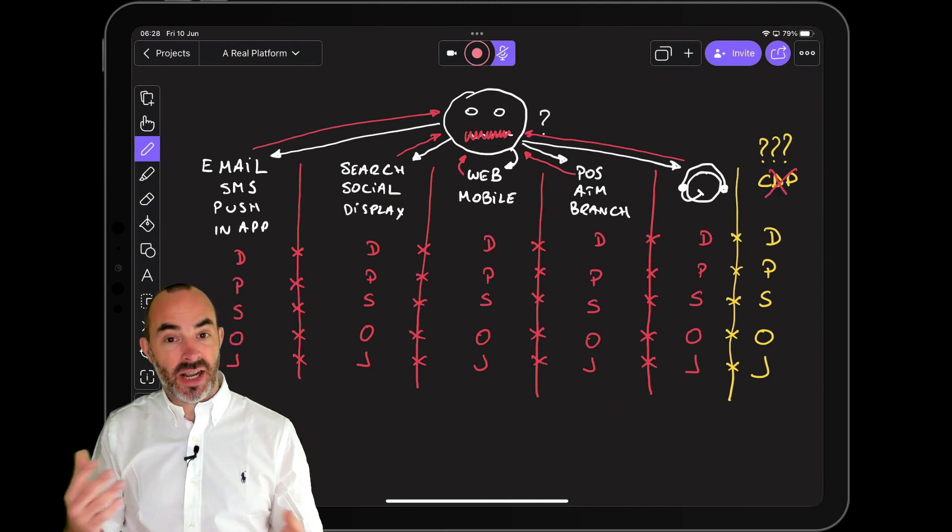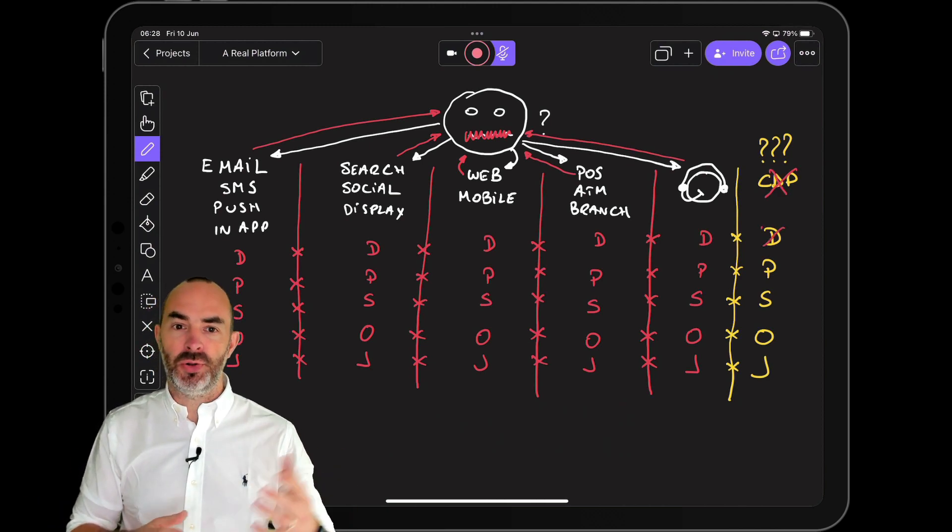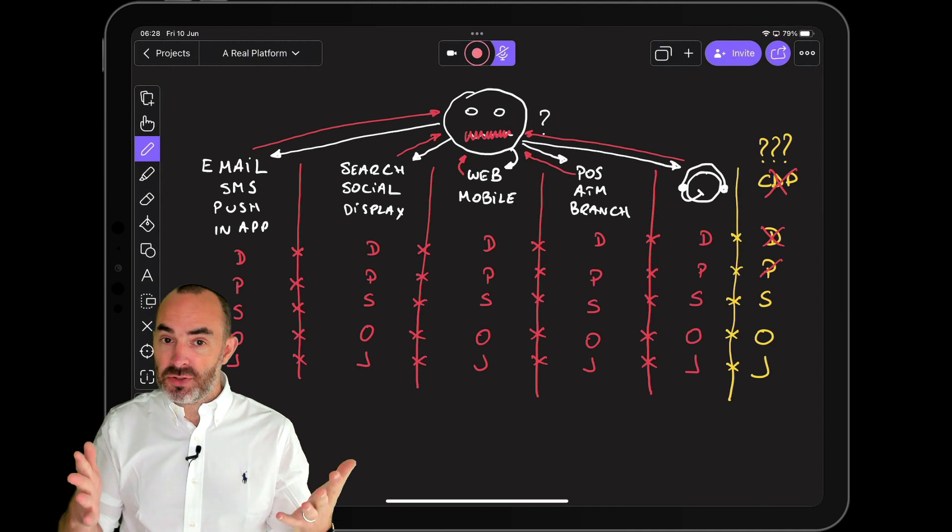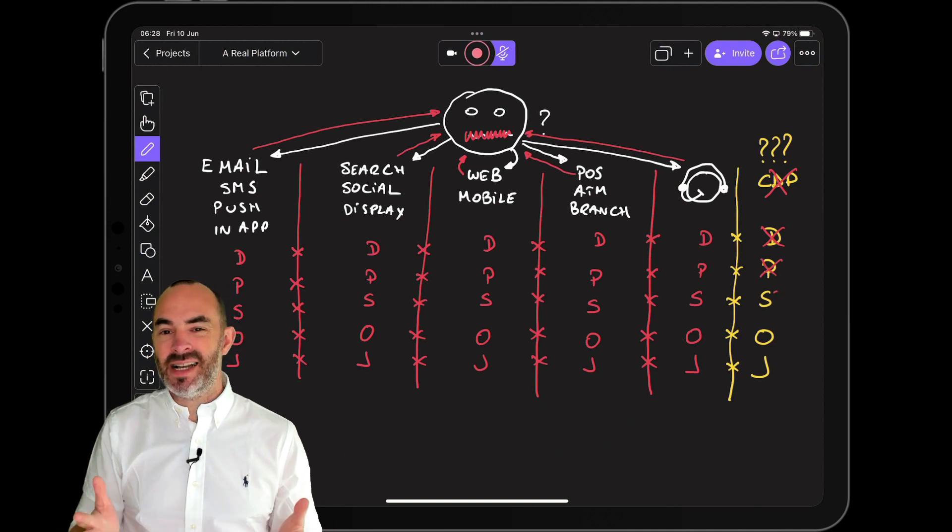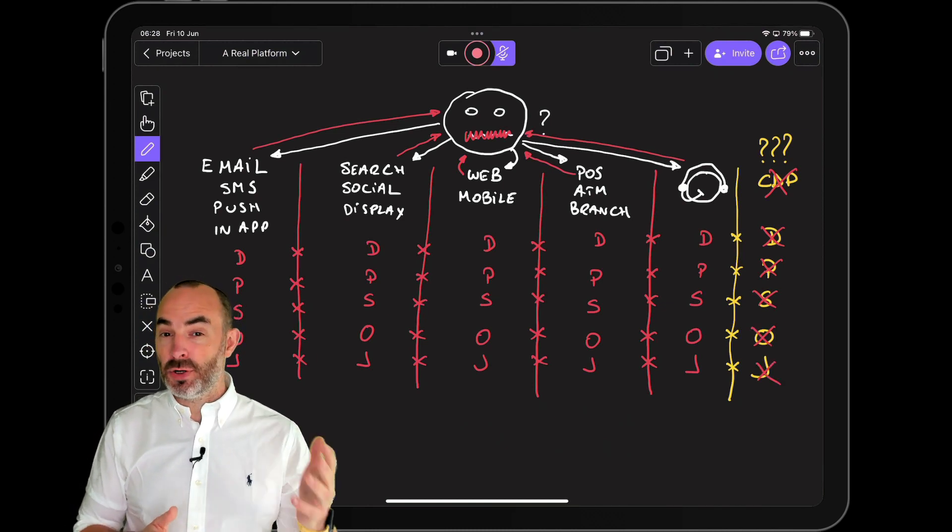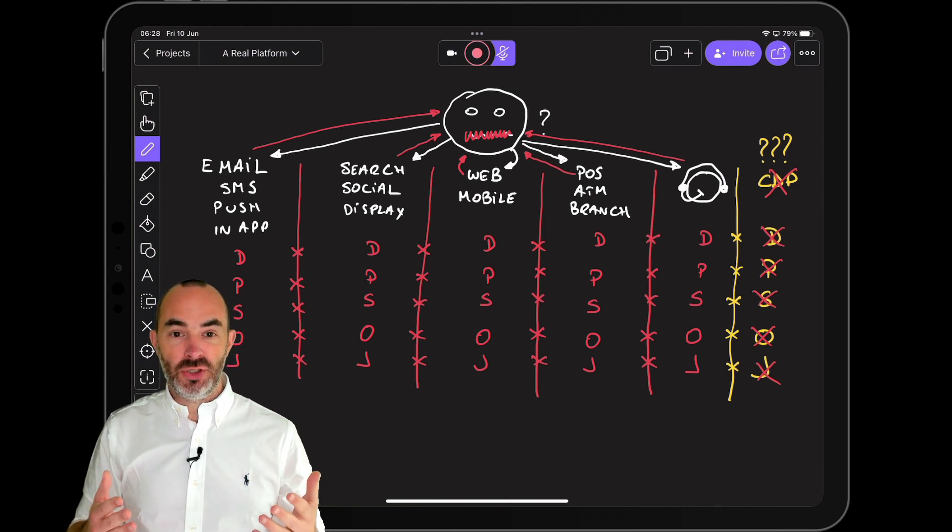And then you start exchanging segments again, just like in the good old days. Segments of thousands or millions of customers, which again, I wouldn't call one-to-one personalization. When you take this approach, you're doing the same thing all over again. And my mother always told me, if you always do what you always did, you will always get what you always got.